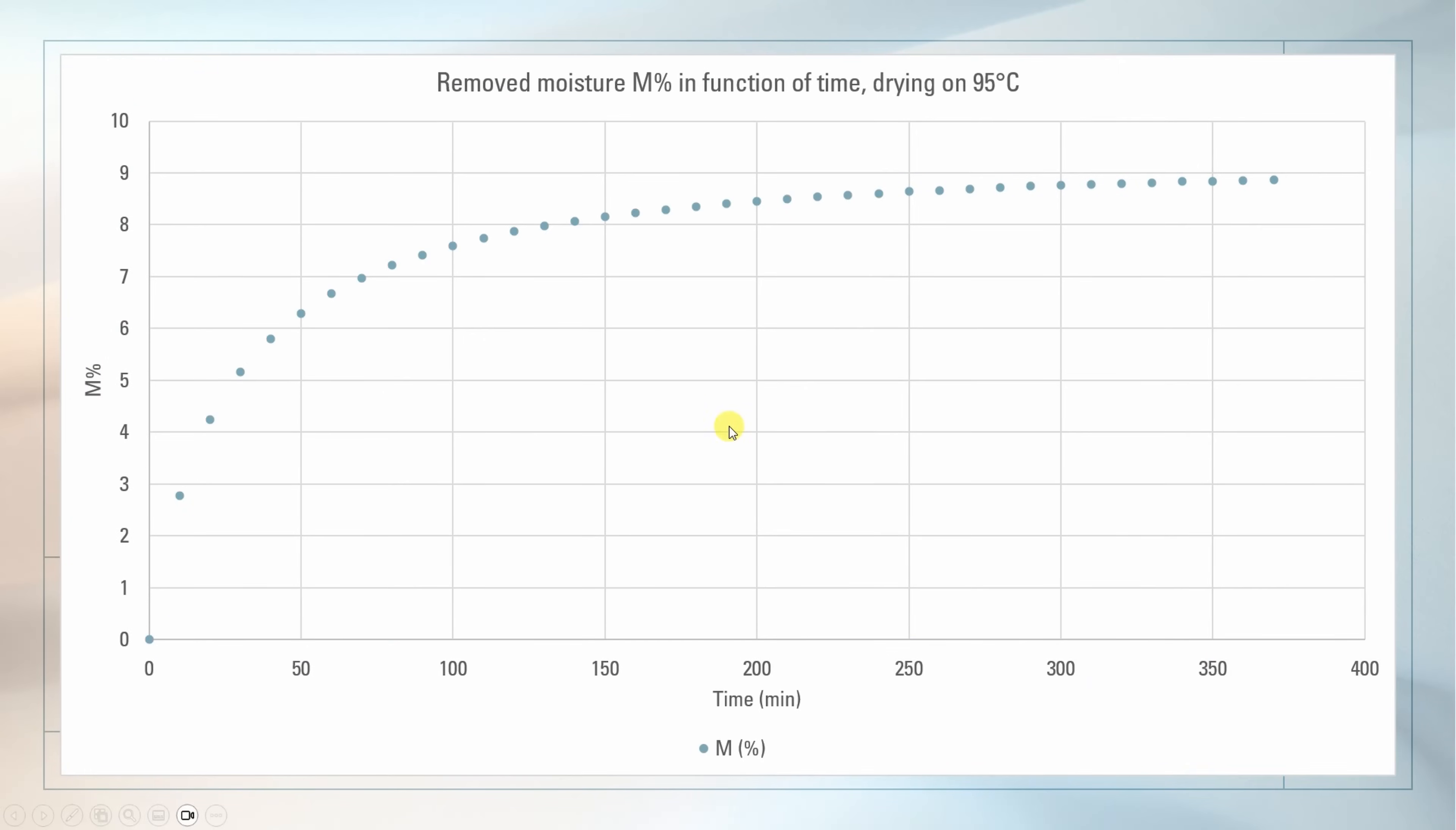Okay, now let's see our measured points. This is measured on the measurement on 95 degrees Celsius drying. On X axis, we have the time in minutes. On Y axis is the removed moisture in the percentage. And we can see these data points are closing to some value somewhere in infinity. And this is actually the maximum percentage of the moisture with this drying.